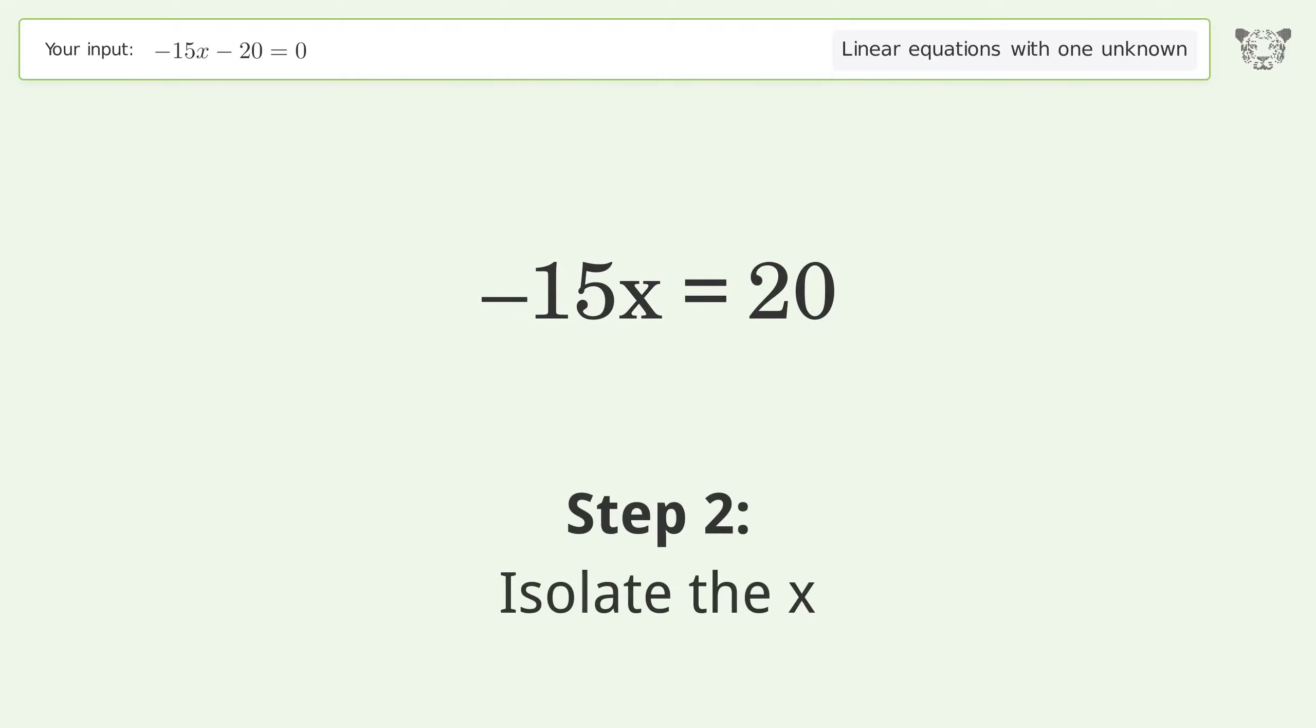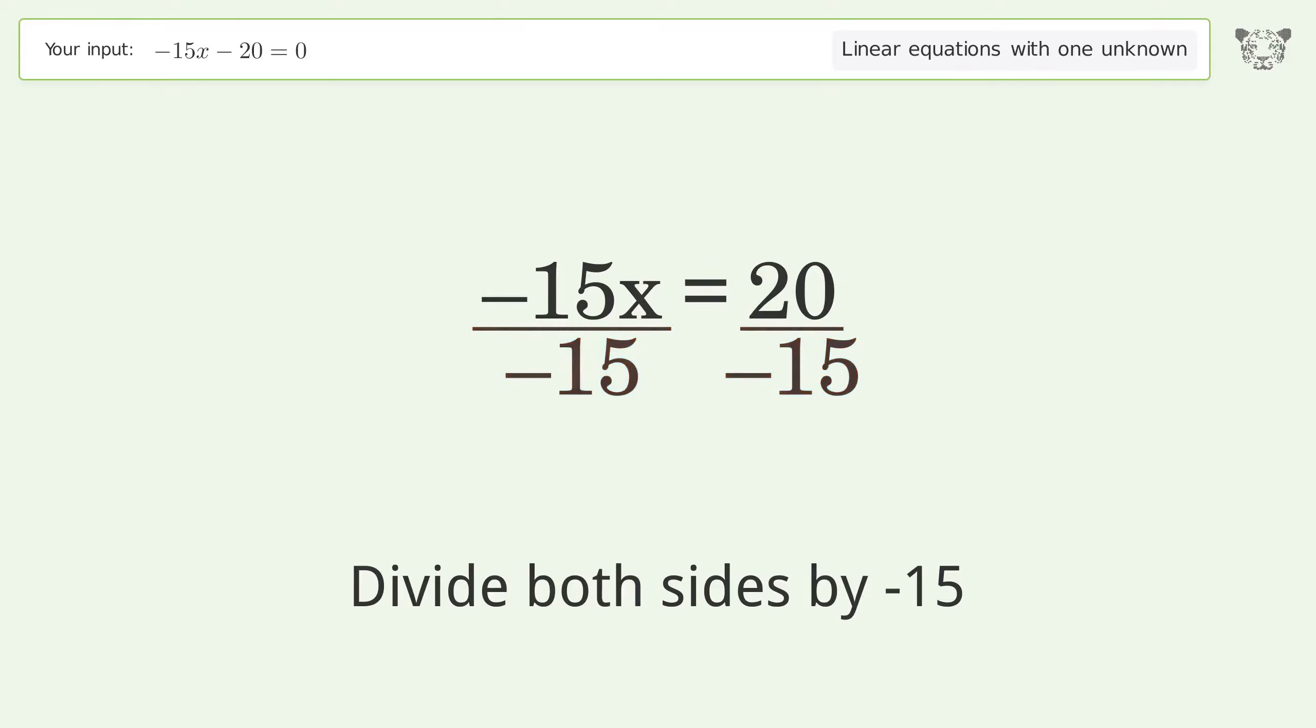Isolate the x. Divide both sides by negative 15. Cancel out the negatives.